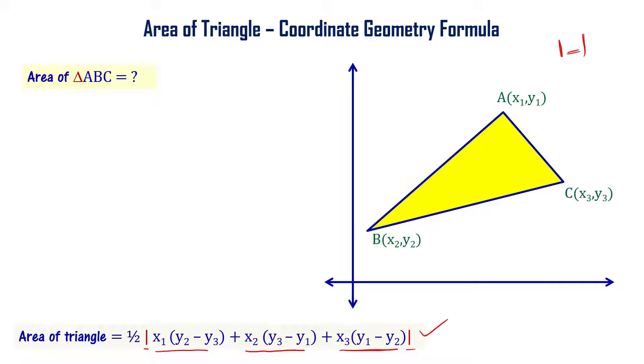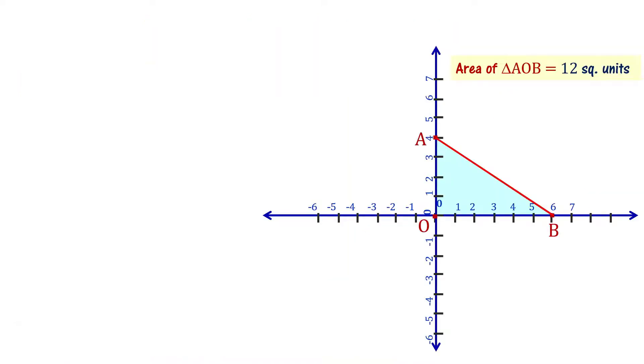Otherwise, the formula is simple: area of triangle equal to half times modulus of x₁ times (y₂ minus y₃) plus x₂ times (y₃ minus y₁) plus x₃ times (y₁ minus y₂). Now, let's use this formula and find the area of this triangle.